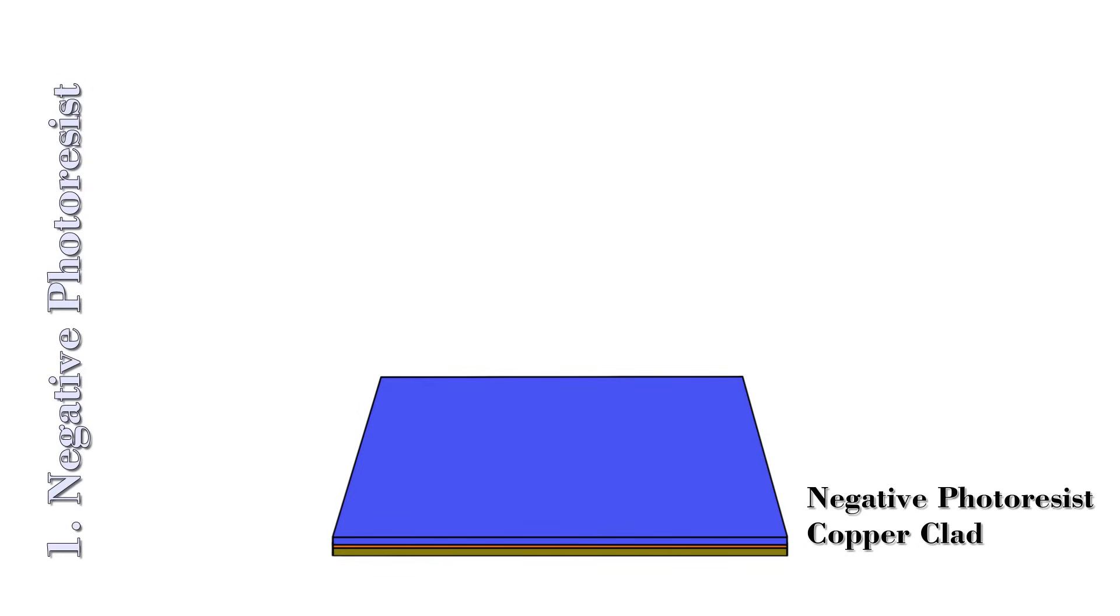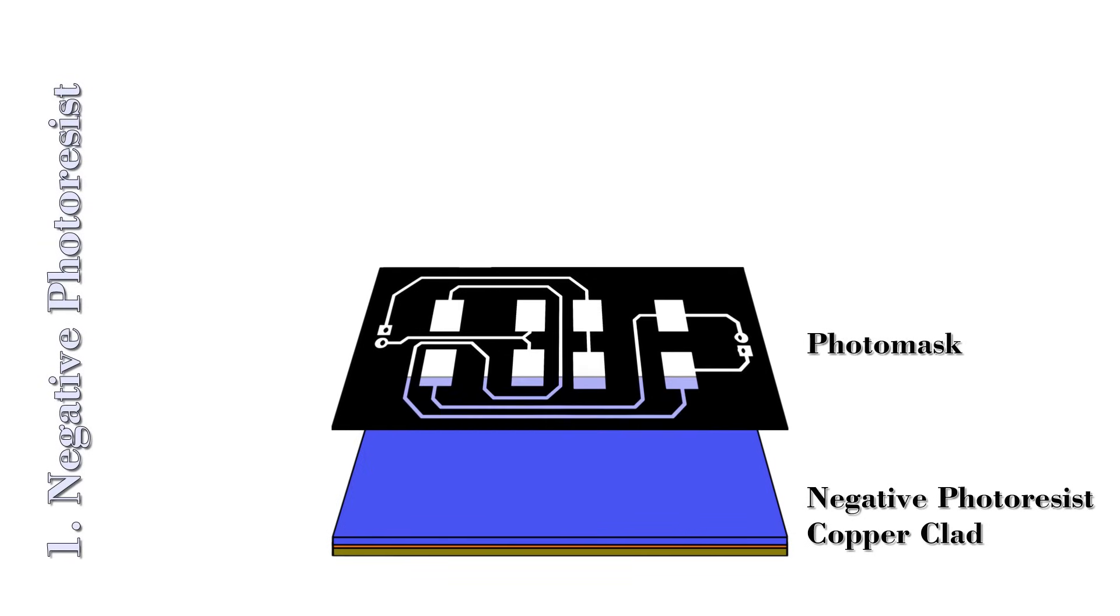To transfer the patterns on the PCB, we utilize our PCB layout design on a photomask. In the photomask layer, our PCB design has a transparent area, hence the light will be transferred from the transparent area to the photoresist. Once the light is exposed on the photoresist, it will become hardened.